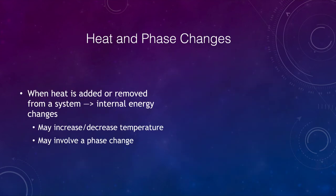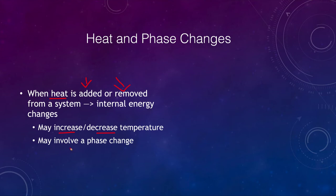Phase changes are another way energy is used. A phase change occurs when matter changes state — from a solid to a liquid, from a liquid to a gas, or sublimating from a solid directly to a gas. This happens when heat is added or removed from a system. The internal energy changes, which will either increase or decrease the temperature, and depending on exact conditions may involve a phase change.